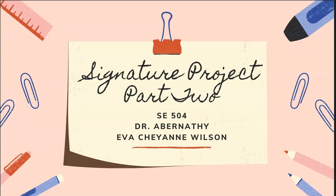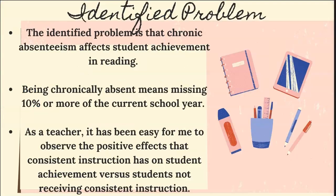Signature Project Part 2, SE 504, Dr. Abernathy, presented by Eva Cheyenne Wilson. The identified problem of this study is that chronic absenteeism affects student achievement in the area of reading. Being chronically absent means missing 10% or more of the current school year. As a teacher, it has been easy to observe the positive effects that consistent instruction has on student achievement versus students not receiving consistent instruction.